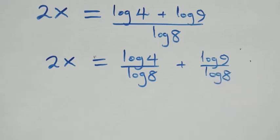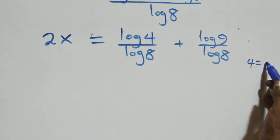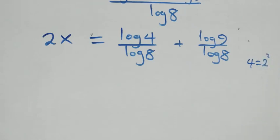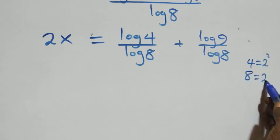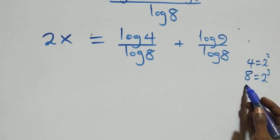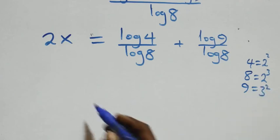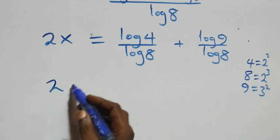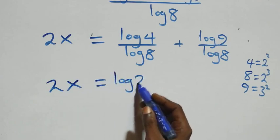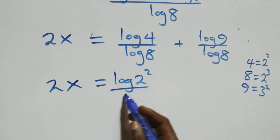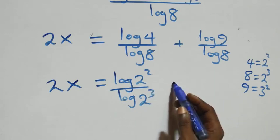Now we can express 4 as 2 times 2, which is 2 squared, and 8 as 2 times 2 times 2, which is 2 raised to power 3. Also, 9 as 3 times 3, which is 3 squared. So we have 2x equals log(2 squared) plus log(3 squared), over log(2 raised to power 3).